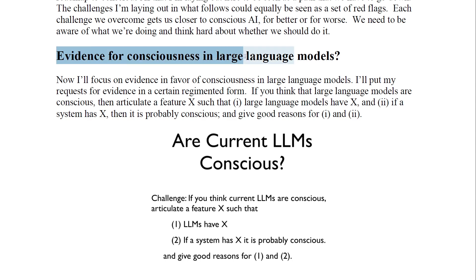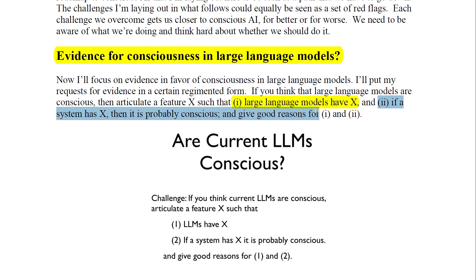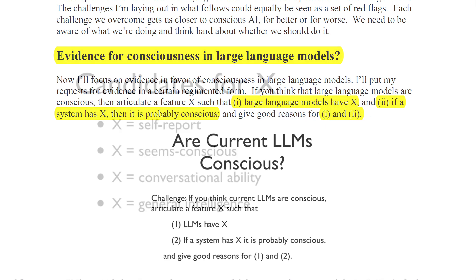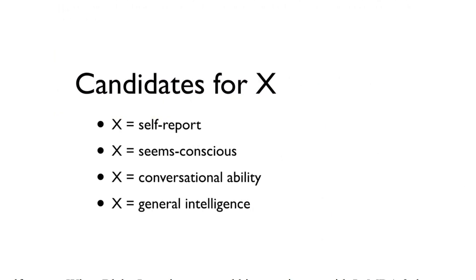Let's focus on the evidence in favor of consciousness. If you believe that large language models are conscious, can you identify a feature X that LLMs possess or lack? And if a system possesses or lacks X, then it is potentially conscious. This requires providing solid reasons for both conditions. There are several potential candidates for X — let's consider four of them.